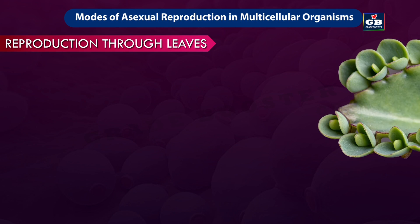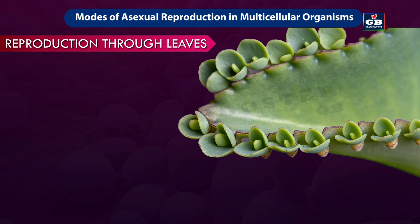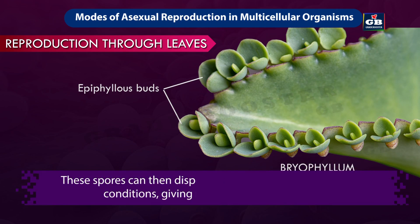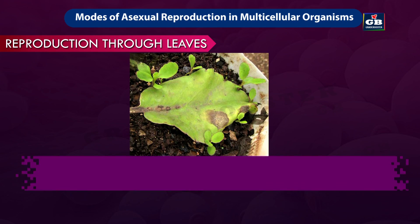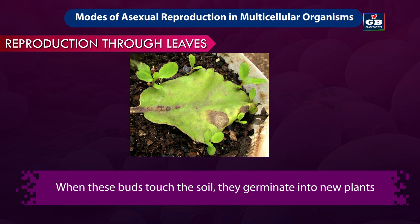Reproduction through leaves: In bryophyllum, certain buds are produced in the notches of their leaves. These buds are called epiphyllous buds. When these buds touch the soil, they germinate into new plants.